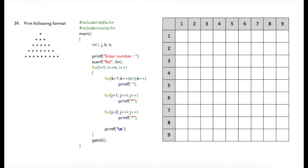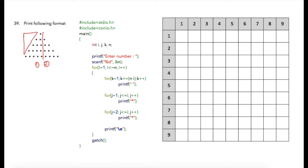In the 39th program we are required to print this format. Notice that this half pattern we have already seen in the previous video, so this is one part and this is the second part. There is one more part which requires printing spaces. For writing this program we will require four loops: one for number of rows, one for spaces using k, then the second part printed with j, and the third part also printed using j.